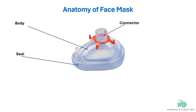Also called the shell or dome, the body is the main part of the mask. They are generally transparent, which allows observation for vomitus, secretions, blood, lip color, and exhaled moisture, and is better accepted by a conscious patient.